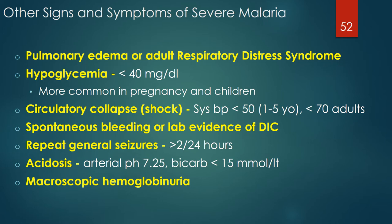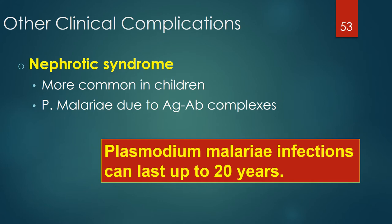Children tend to have more hypoglycemia than adults. Circulatory collapse or shock includes a systolic blood pressure less than 50 for children 1–5 years old or less than 70 for adults. Other severe malaria signs include spontaneous bleeding or lab evidence of disseminated intravascular coagulation, repeat general seizures greater than 2 per 24 hours, acidosis with an arterial pH of 7.25 and bicarbonate less than 15 mmol/L, and macroscopic hemoglobinuria. Other clinical complications include nephrotic syndrome, more commonly seen in children, and associated with Plasmodium malariae due to antigen-antibody complexes during chronic infection.